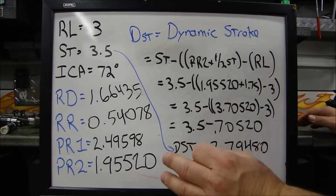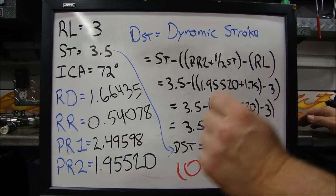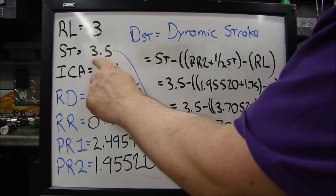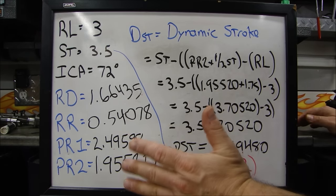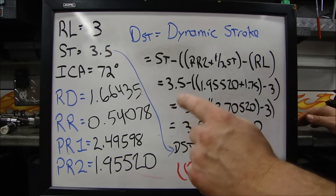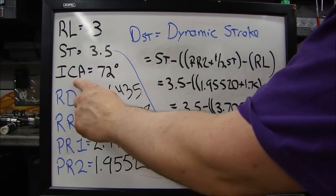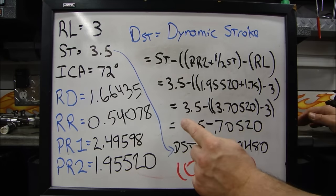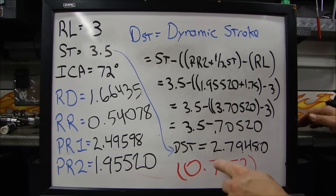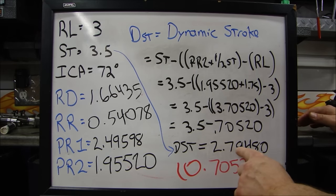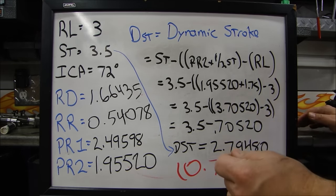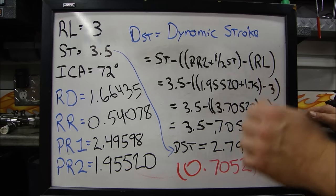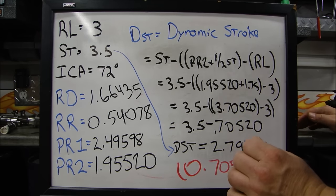Which, if you take our stroke of 3.5 and subtract this number, you have a difference of 0.7052 inches difference in stroke. That's just under three quarters of an inch difference in stroke. So that's the difference between dynamic and static compression. Static compression is based on your stroke of 3.5, which is your at rest stroke. But while the engine is moving, based on the installed centerline angle of the camshaft of 72 degrees, that 3.5 is actually 2.79480. Which means your compression is lower. Your dynamic compression will be lower than your static compression.